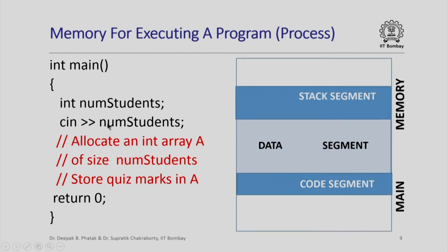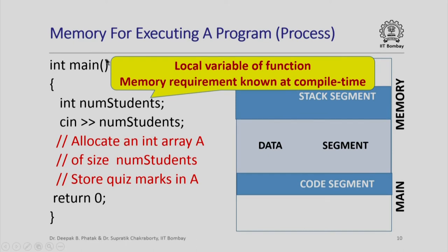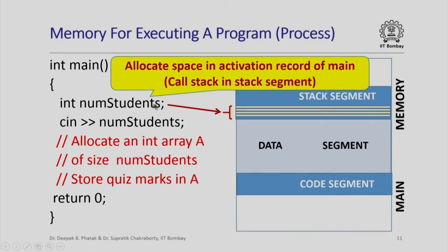Here is a simple program which illustrates this. I have an integer variable called numstudents and I read in its value. Here is how the part of memory allocated for this program looks: the stack segment, data segment, and code segment. After I have read in the number of students, I might want to allocate an integer array A of size numstudents so that I can store the quiz marks of all these students in array A. Now, numstudents is a local variable of the main function. At compile time I know I am going to need this variable; it is of type integer, so I know exactly how much memory is required. I can allocate space for it in the activation record of main when main gets called, and of course the activation record is stored in the call stack in the stack segment.